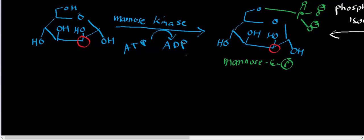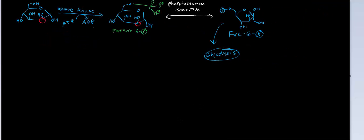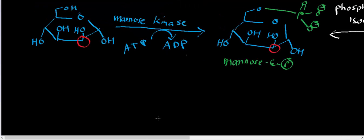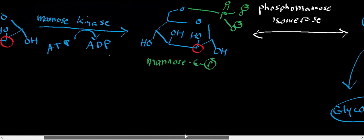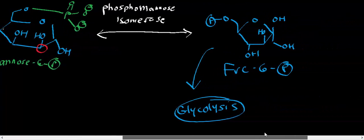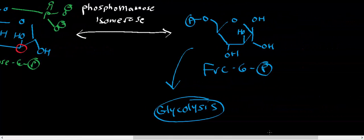So mannose is an epimer of glucose and it's going to get ultimately consumed by mannose kinase to form mannose 6-phosphate. And then phosphomannose isomerase is going to form fructose 6-phosphate. And essentially, fructose 6-phosphate is just going to enter glycolysis.